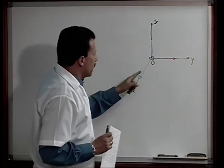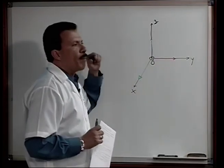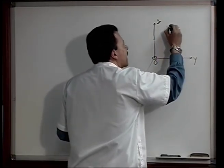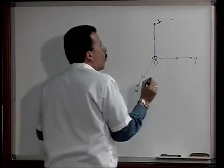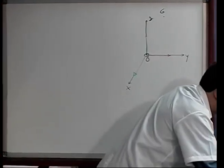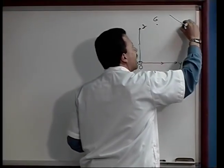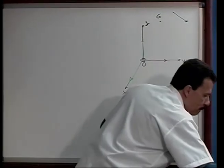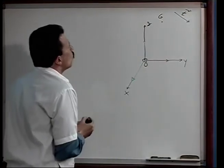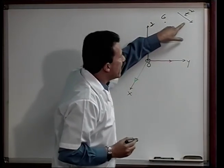Supongamos que tenemos el punto G con las coordenadas dadas y también el vector asociado al vector libre T. Vamos a determinar la ecuación de una recta que, pasando por el punto G, es paralela al vector T. De la geometría euclidiana podemos recordar en uno de sus axiomas que por un punto exterior a una recta dada —en este caso la recta de acción o recta subyacente sobre la cual descansa el vector T— por este punto exterior podemos trazar una recta paralela única.